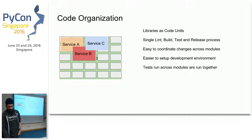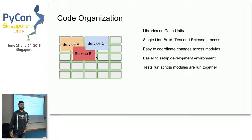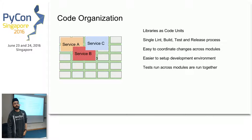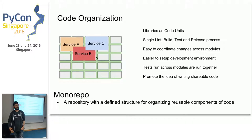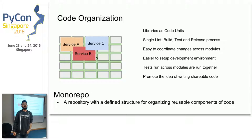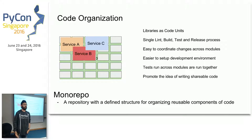This is not a new concept — it's an existing concept that many companies have used in the past. It's called the monorepo. There are pros and cons, and many people argue both for and against it. I define monorepo as a repository with a defined structure for organizing reusable components of your code.